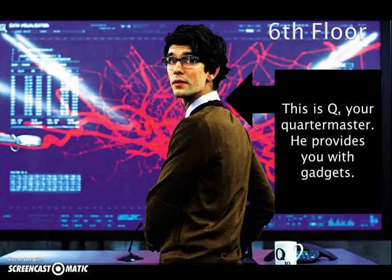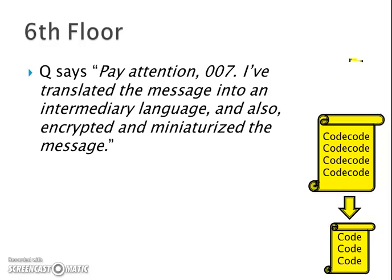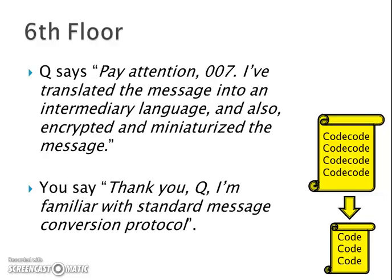This is Q, your quartermaster. He provides you with gadgets. He says: pay attention 007, I've translated the message into an intermediary language and I've also encrypted and miniaturised the message. You reply: thank you Q, I'm familiar with the standard message conversion protocol.